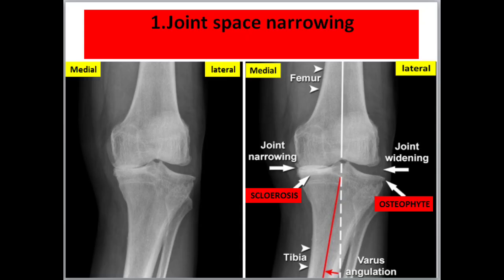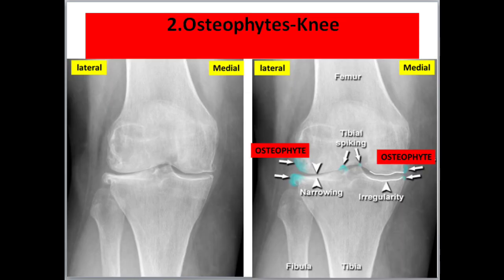Number one: joint space narrowing. In this picture, we see the medial side of the knee joint is severely narrowed such that the femur and tibia are touching, and the lateral side of the joint is widened. There is abnormal varus angulation of the tibia. We also see increased density indicating articular surface sclerosis.